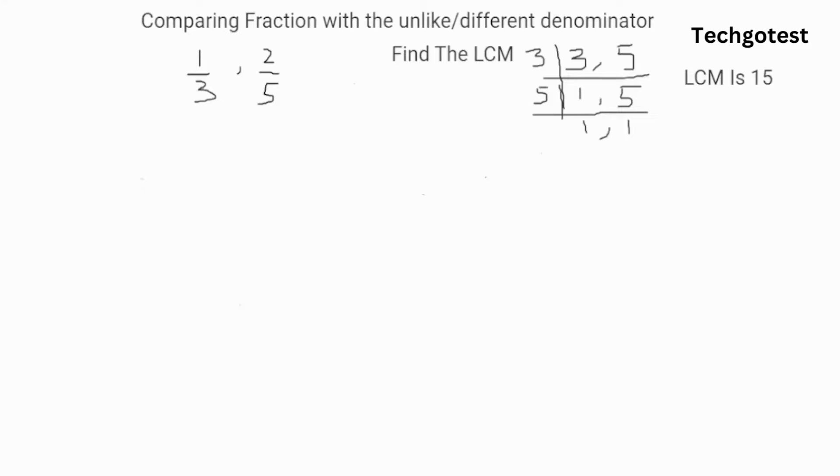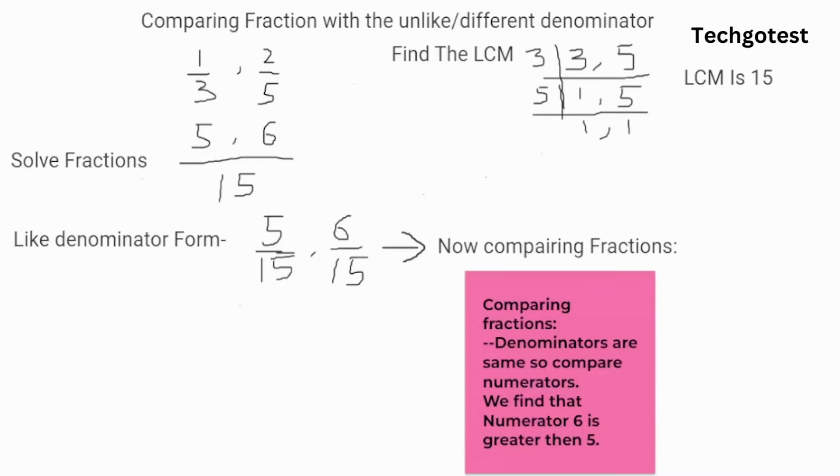Find the LCM, and we find that the LCM is 15. Solve the fractions and write them in like denominator form: we get 5/15 and 6/15. When comparing fractions with the same denominators, we compare numerators. We find that numerator 6 is greater than 5. Since 6/15 is greater than 5/15, therefore 2/5 is greater than 1/3.